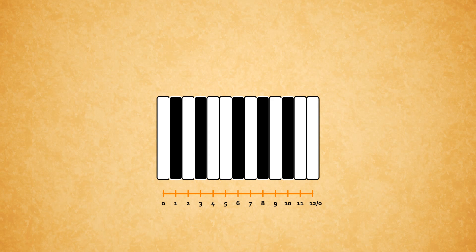Logically, the layout of the keyboard reflects this symmetry. Keys are arranged regularly. The distance between any two consecutive keys is always the same.